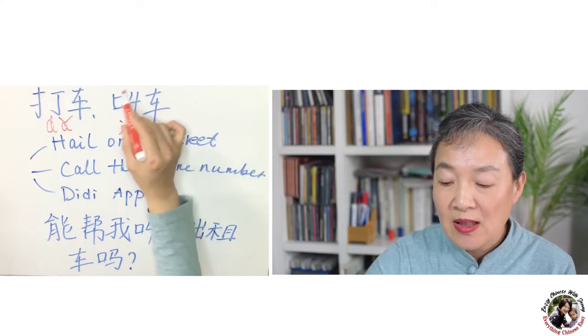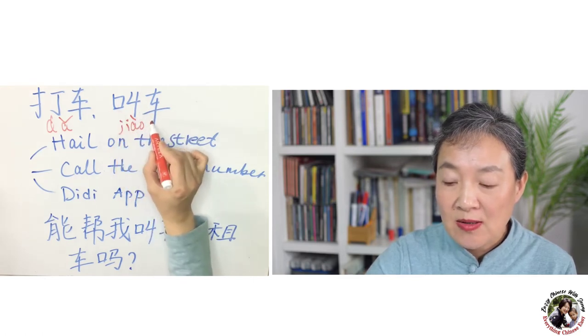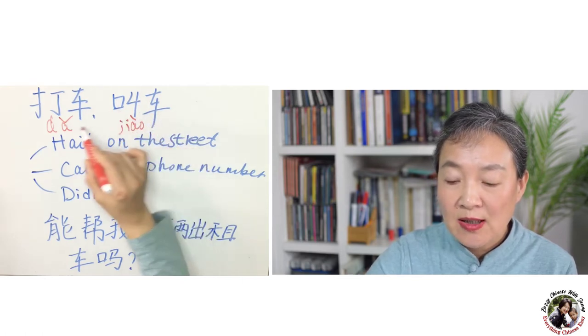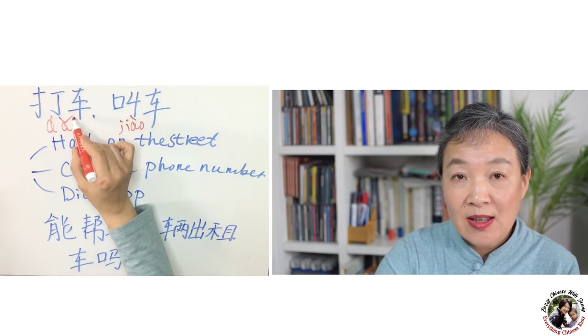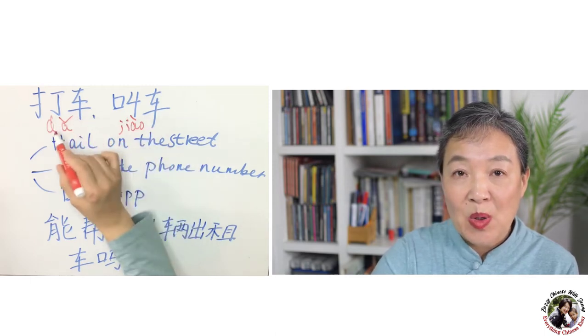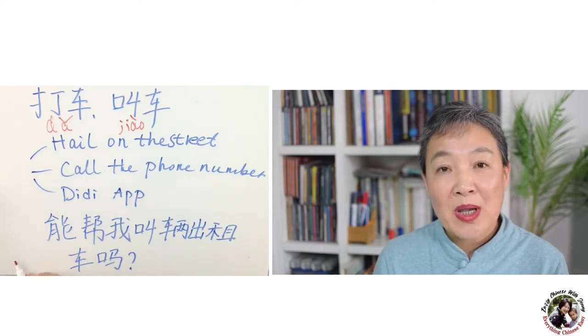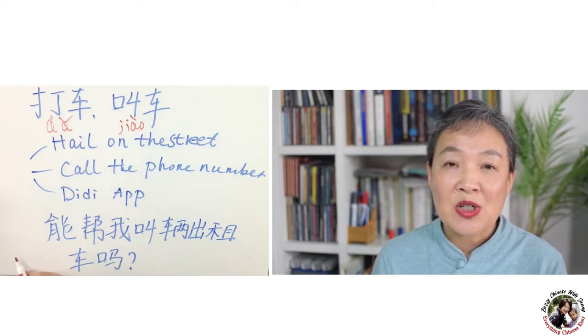So how do you call a taxi in Chinese? You can say 叫车 — 叫 means call, 车 means car — or 打车. Both 叫车 and 打车 mean 'call a taxi.'